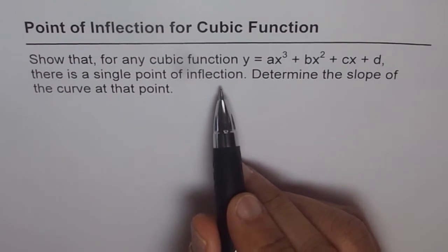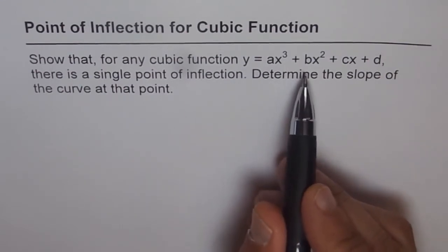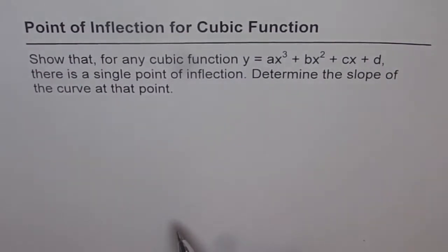Point of inflection is a point where the second derivative is zero, that's the first part, and where the concavity of the second derivative changes. So there are two things for point of inflection.